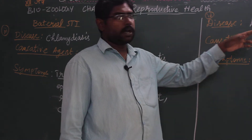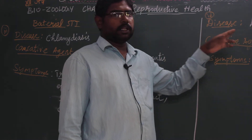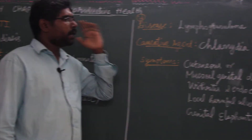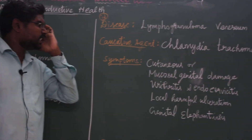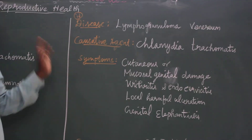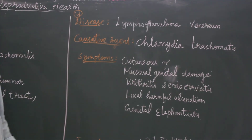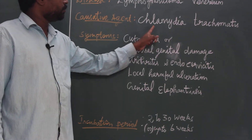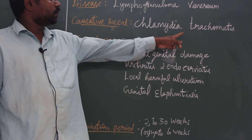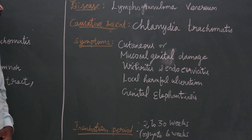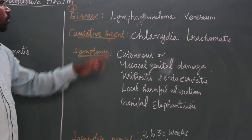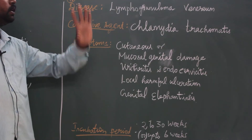The fourth bacterial sexually transmitted disease is Lymphogranuloma venereum. This is also a bacterial disease caused by Chlamydia trachomatis.